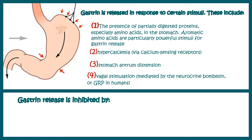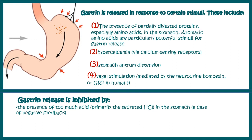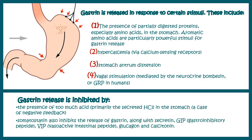Now let us look at the factors that inhibit gastrin secretion. First, the presence of too much HCL provides negative feedback and prevents gastrin secretion, which in turn reduces HCL secretion from the parietal cell. Additionally, several hormones such as GIP, secretin, VIP, and glucagon also prevent gastrin secretion and thereby reduce gastric HCL secretion as well.